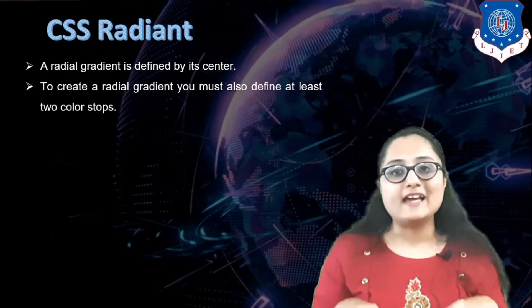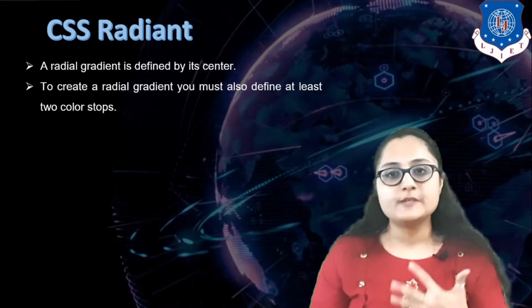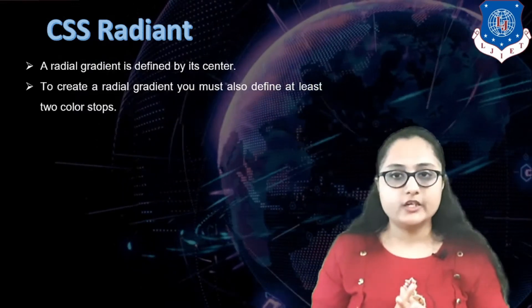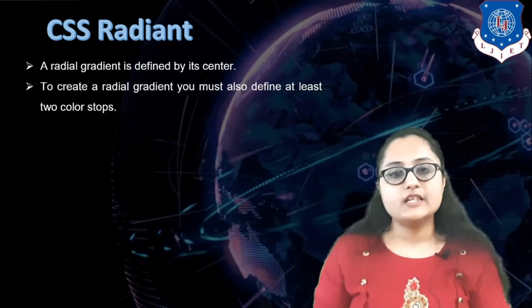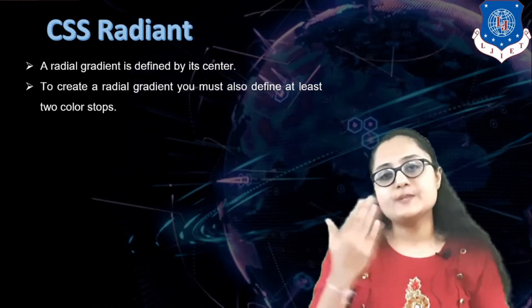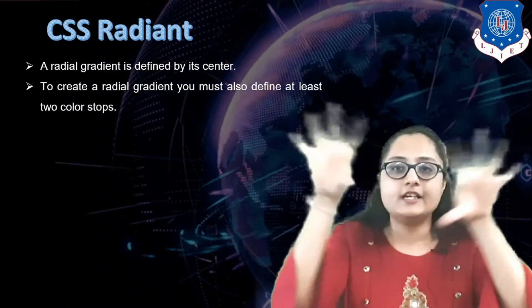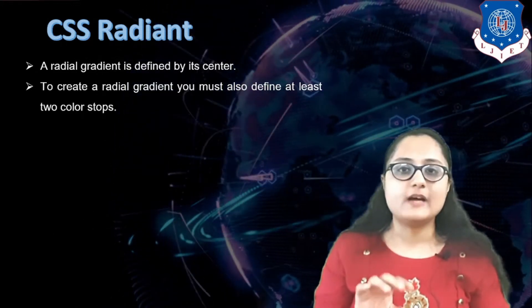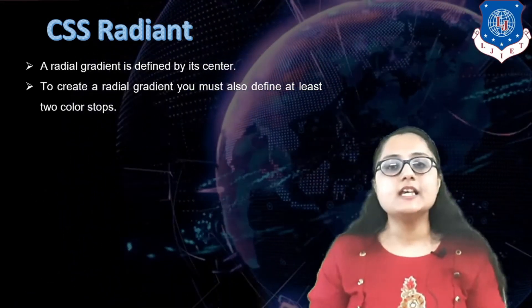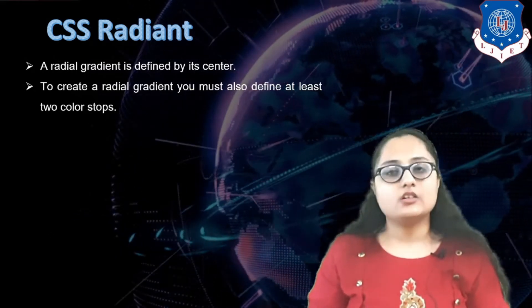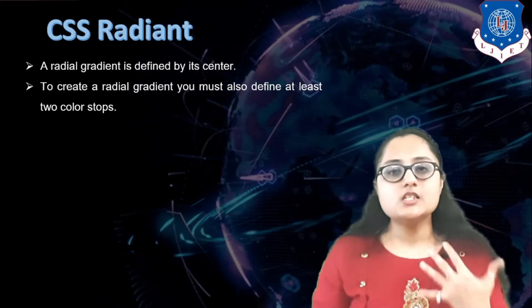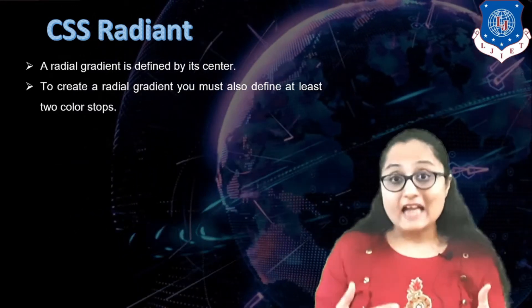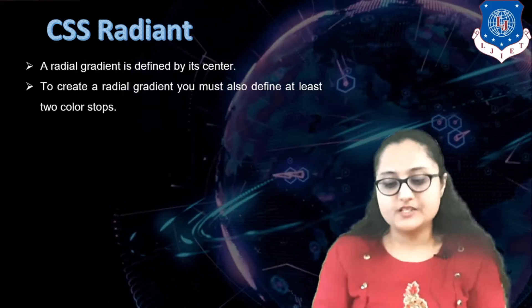A radial gradient is defined by its center. If you recall, the linear gradient was specified either top to bottom, left to right, or diagonally. Whereas in a radial gradient you have only one option — it is defined from the center. You must create a radial gradient by specifying a minimum of two colors. It starts from the center and goes towards the edges, covering them by default in an oval shape. The transition looks circular, and by default you get an ellipse, but you can also specify a circle.